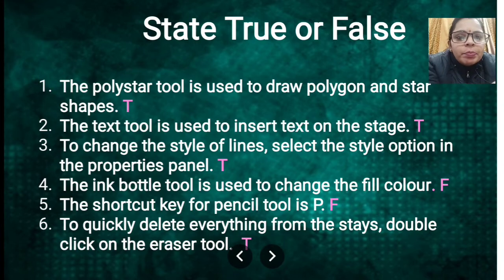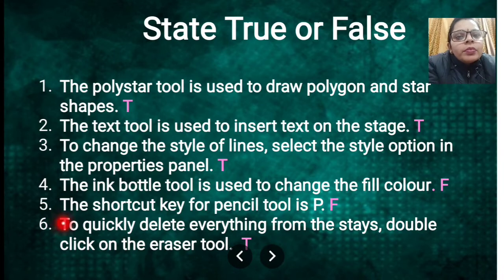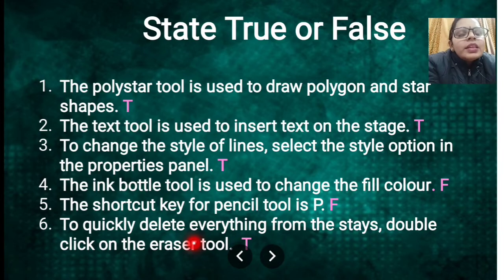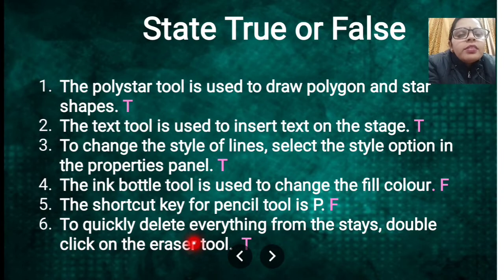Next true/false: to quickly delete everything from the stage, double-click on the Eraser tool. When we need to delete something quickly we double-click the Eraser and it erases everything immediately — that is True.